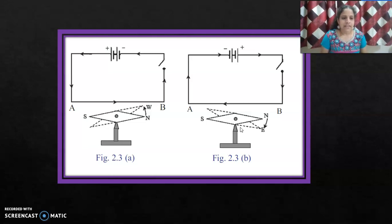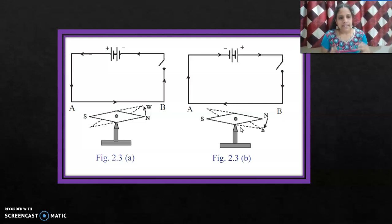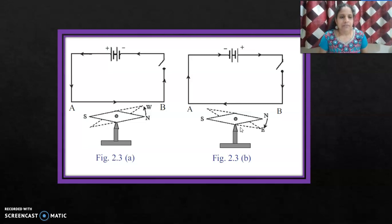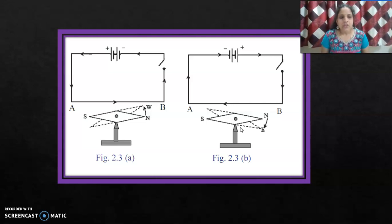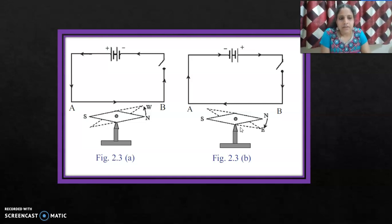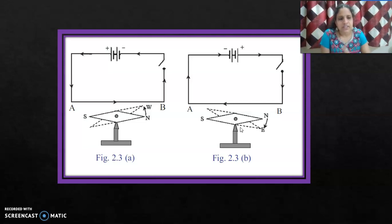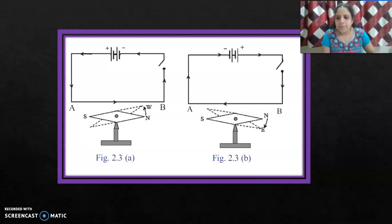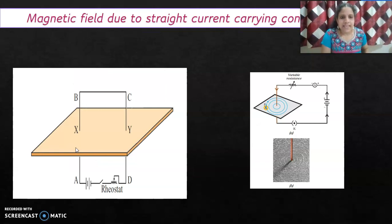After that, many experiments were done with different shaped current-carrying conductors, and scientists found that different shaped conductors produce different shaped magnetic fields. We have already seen the magnetic field due to a bar magnet. Similarly, we can plot the magnetic field due to a straight current-carrying conductor. Throughout this chapter we will study a straight current-carrying conductor, a circular loop, and a solenoid — three different shaped conductors and their magnetic fields.